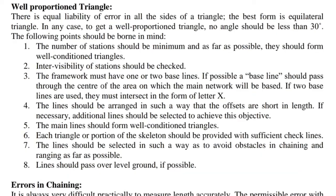Well-proportioned triangle: There is equal likelihood of error in all sides of a triangle. The best form is an equilateral triangle; no angle should be less than 30 degrees. The number of stations should be minimum and form well-conditioned triangles. Intervisibility of stations should be checked. The framework must have one or two baselines; if possible, a baseline should pass through the center of the area. If two baselines are used, they must intersect in the form of the letter X.